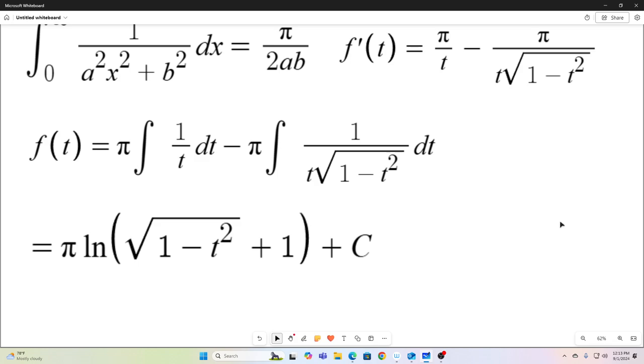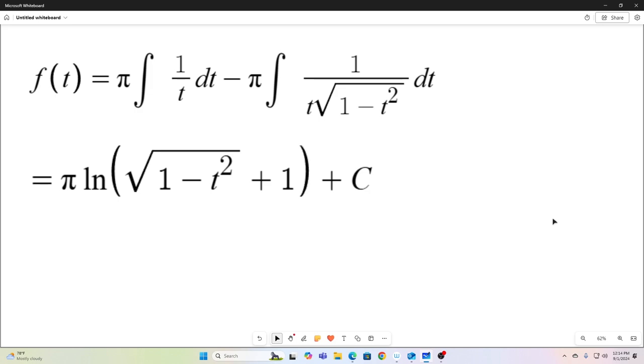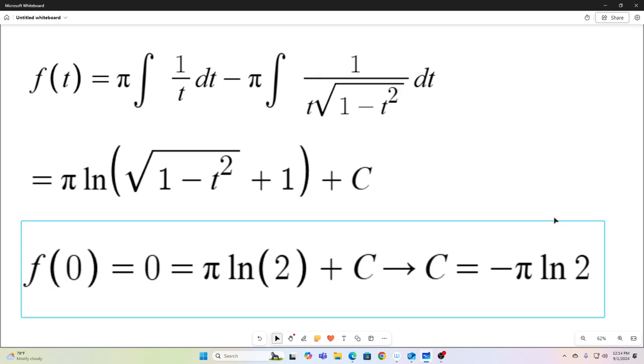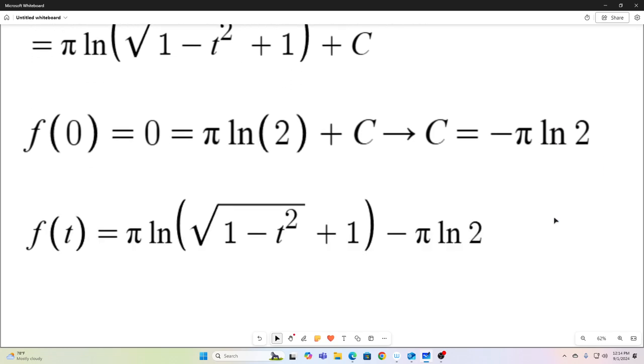Now don't forget, we know something about our f of t evaluated at 0. We know that it's equal to 0. So we have f of 0 is equal to 0, which is also equal to π times the natural log of the square root of 1 minus 0 squared, so that's just 0. So we have, oh I'm sorry, that's 1. So that ends up to be natural log 2. So 0 is equal to π natural log 2 plus c, implying that c is equal to negative π natural log 2. So we can plug that in. So we have f of t is now equal to this.